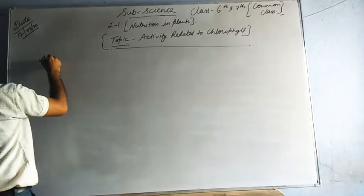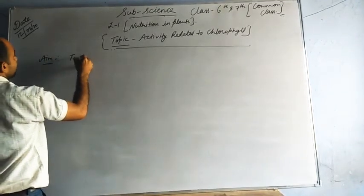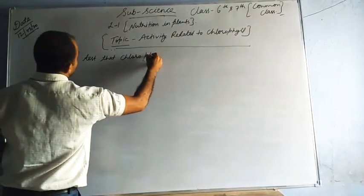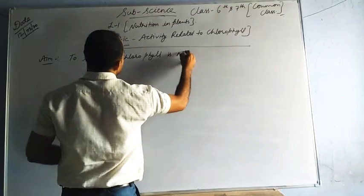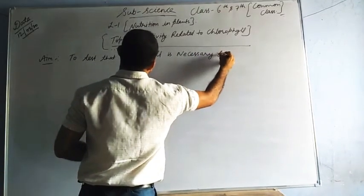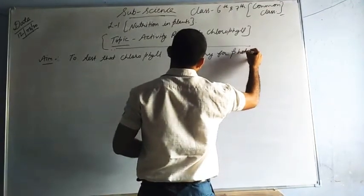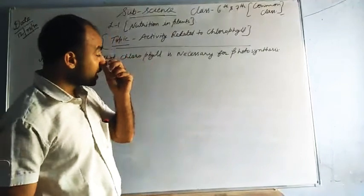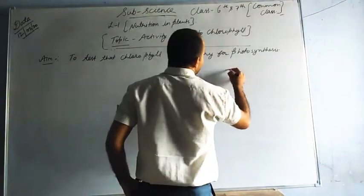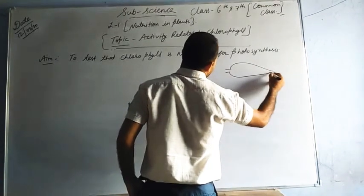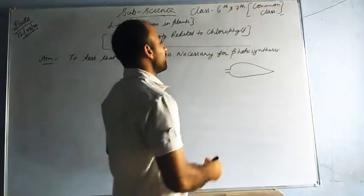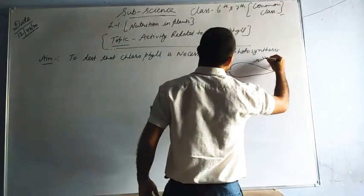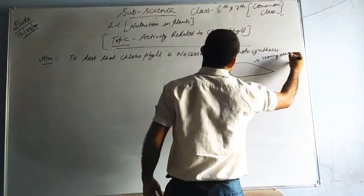Now we are going to perform an activity. The aim is to test that chlorophyll is necessary for photosynthesis. How we will do this, how we will prove it? For this purpose, take a leaf that is variegated, showing variation in color.